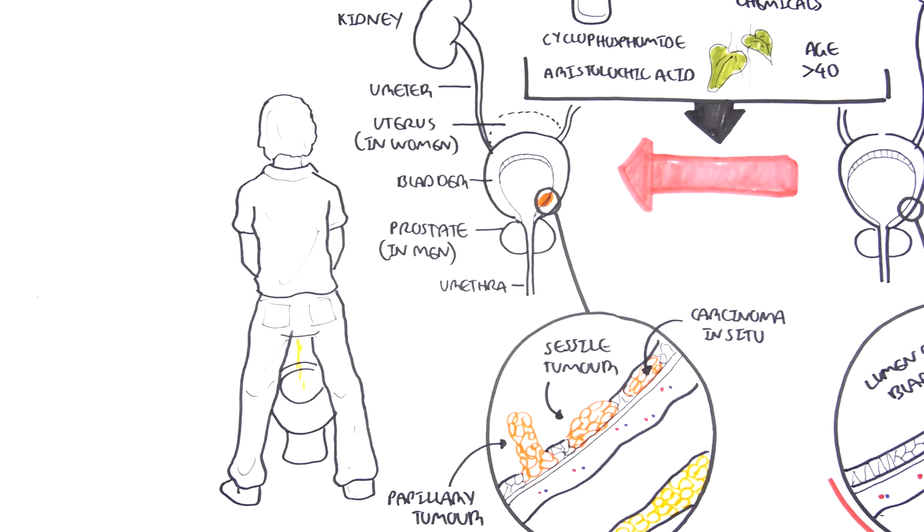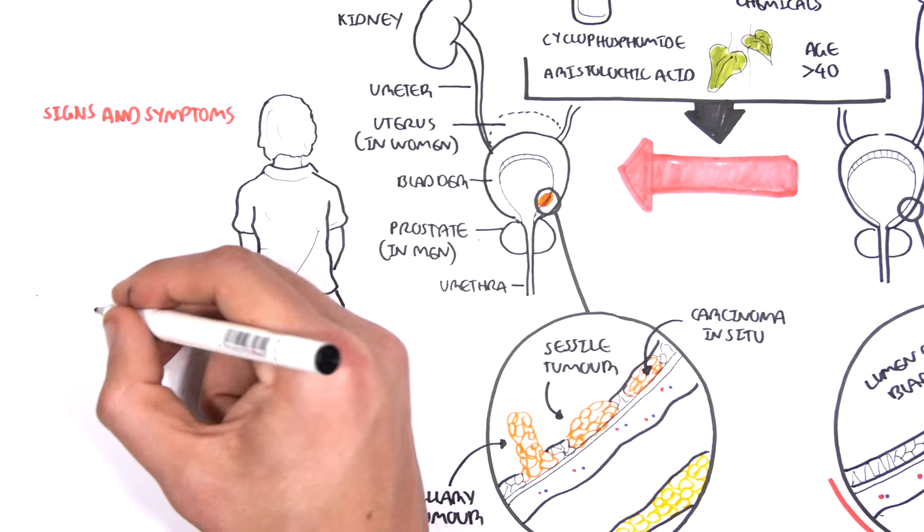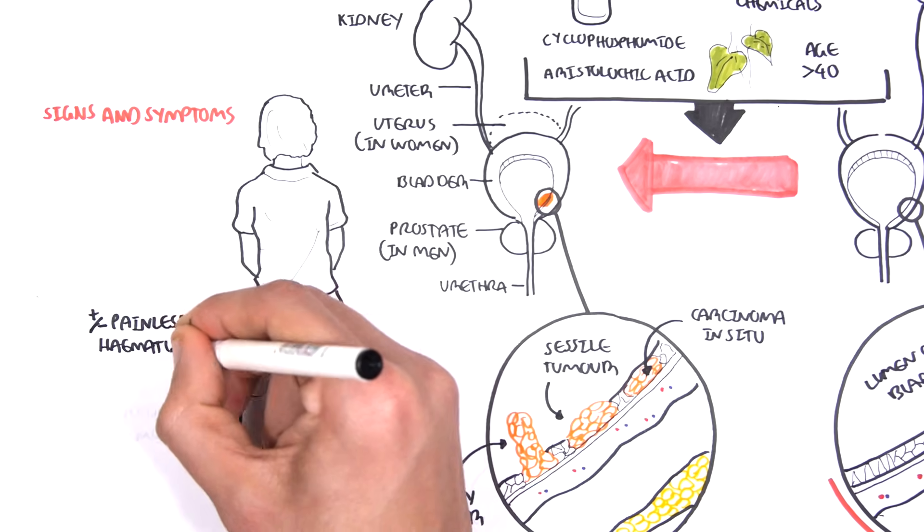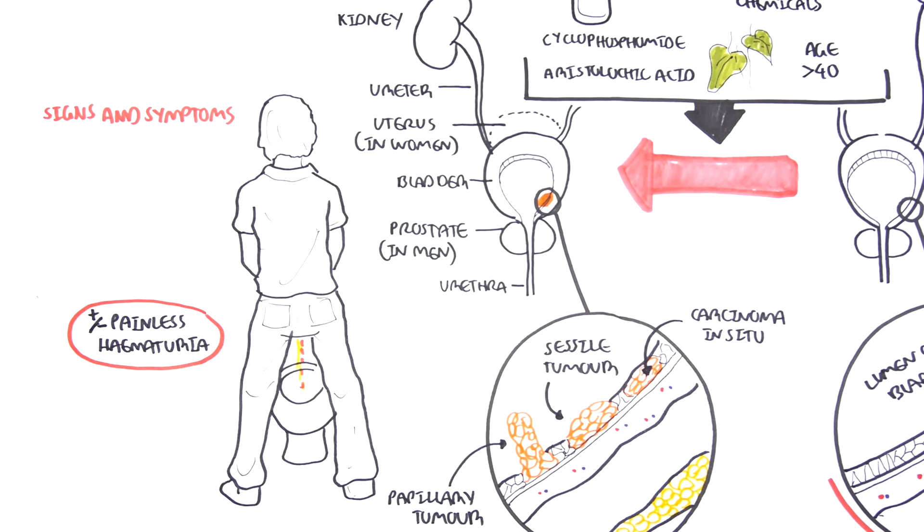The signs and symptoms of bladder cancer include hematuria, mainly with or without pain. It's usually painless hematuria, and presentation of this should always ring alarm bells, especially if in the presence of the other risk factors such as age.